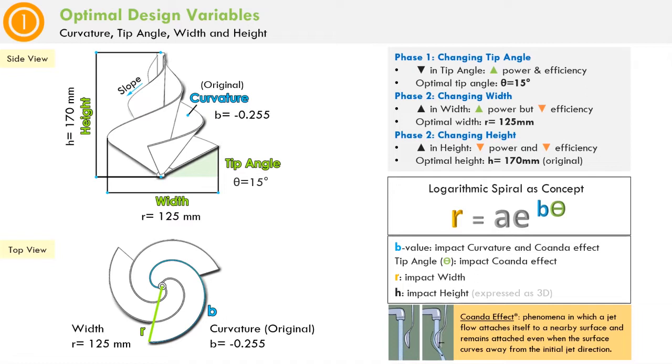These changes influence the Coandă effect, power, and efficiency. In general, a decrease in tip angle increases power and efficiency. An increase in width increases power but decreases efficiency. An increase in height decreases both power and efficiency.